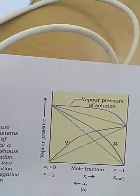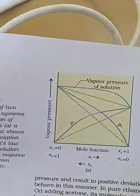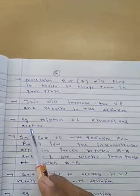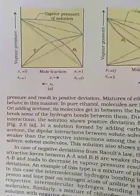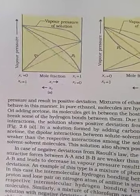This is positive deviation — vapor pressure goes higher. The increase in vapor pressure results in positive deviation from Raoult's law. An example is a mixture of ethanol and acetone. Other examples are also given on this page.